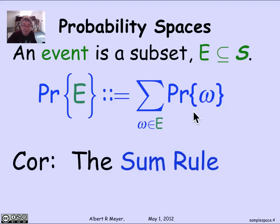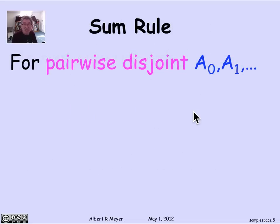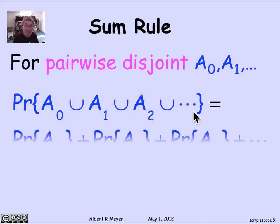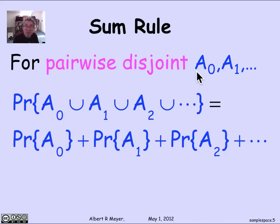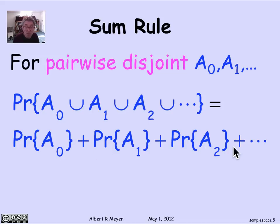As an immediate corollary of this definition, we get something central to probability theory called the sum rule. It says that if you have a bunch of events that are pairwise disjoint — no outcome in common between A0, A1, A2, and so on — then the probability of the union of the A's is simply the sum of the individual probabilities. This is very convenient: break the problem into separate cases, handle each A0, A1 separately, and add up the probabilities.